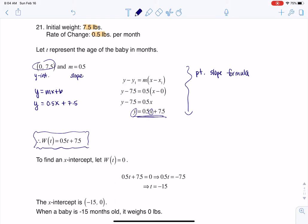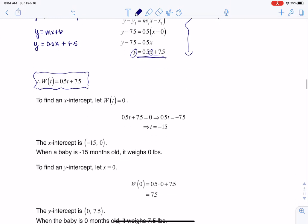Now to find intercepts, we always let the opposite letter equal zero. So what I mean by that is, if I want to find an x-intercept, I'm going to let y equal zero, but I'm not using y, I'm using W. So that's what I do. I set my function equal to zero, and then when I solve for T, I get negative 15.